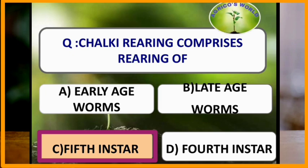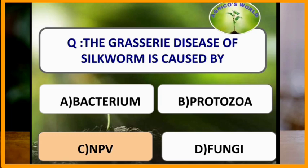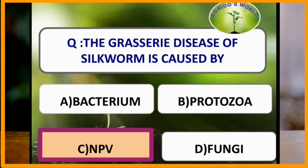The Grasserie disease of silkworm is caused by nuclear polyhedrosis virus. Flacherie disease is caused by bacterium. Muscardine disease is caused by fungus. Pebrine disease is caused by protozoan.